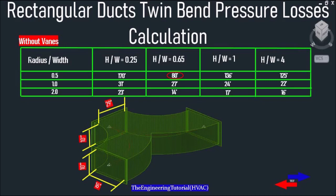Pressure losses due to friction or resistance to flow is the loss of total pressure in a duct or fitting. As you can see, this is a rectangular twin band — also known as a double elbow — connected to a main supply duct, which can cause minor or dynamic losses in the duct system. Dynamic losses are the result of changes in direction, size, shape, and velocity of airflow.